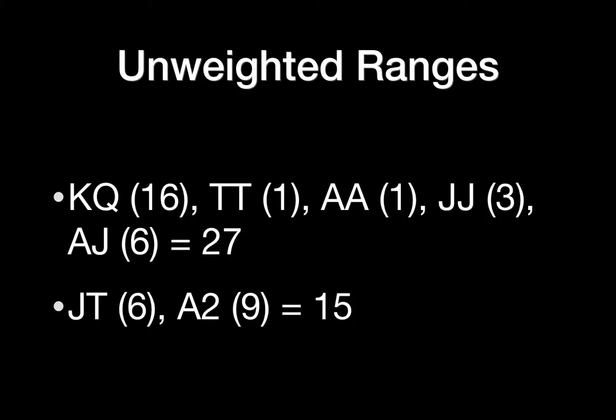While there is certainly a possibility that our opponent could have us beat, it's actually relatively unlikely given the type of opponent we're playing against. Let's start by taking a full picture of the combinatoric possibilities of hands that we're ahead of and behind. There are 16 combinations of king-queen, 12 of them offsuit and 4 of them suited. There's one combination of a set of tens, one combination of a set of aces, and three combinations of a set of jacks. There are also six combinations of ace-jack. We can quickly do back of the napkin math and estimate that there are 27 different ways that we are currently behind.